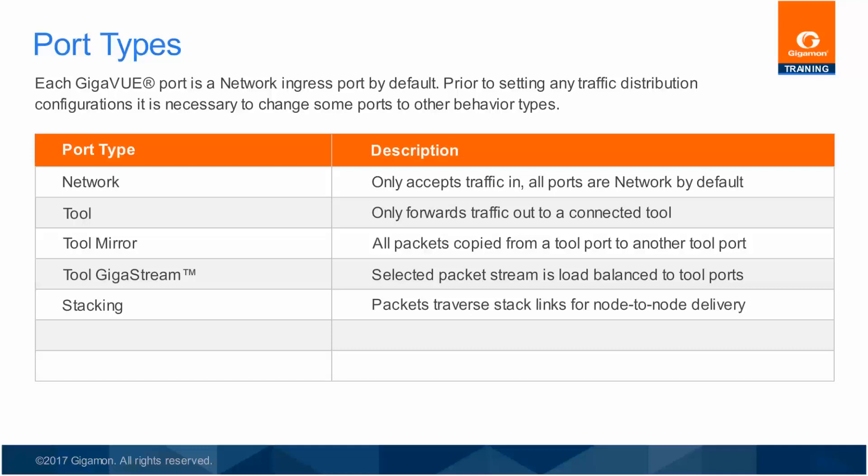In the Gigaview 8 series, these stacking links are used to form cluster configurations, where between two and eight nodes form a single logical entity. Stack links may also be used to forward traffic to a shared Gigasmart before going to a tool port.